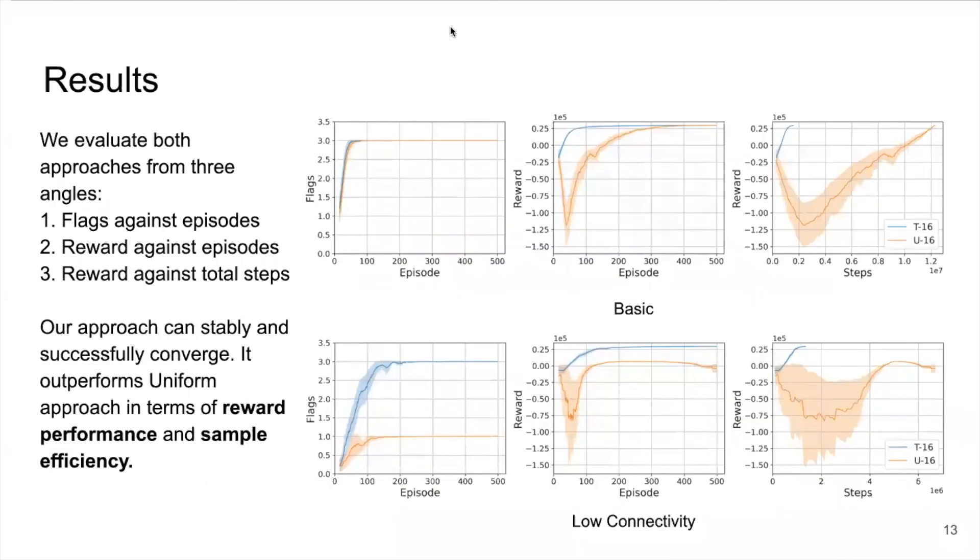Here I'm showing the performance comparison between two approaches after 500 episodes of ground learning. We evaluate both approaches from three angles: flags against the episode, reward against the episode, and reward against the total steps costed among all episodes so far. The third angle especially shows sample efficiency of both approaches. P refers to our approach and U refers to uniform approach. Using the same number of abstract states, our approach can stably and successfully converge.